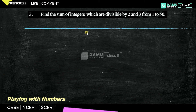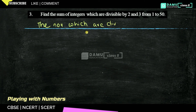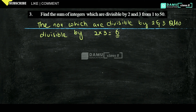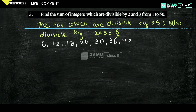In this module we are going to discuss the third question: find the sum of integers which are divisible by 2 and 3 from 1 to 50. The numbers which are divisible by both 2 and 3 are also divisible by 6. So the numbers divisible by 6 from 1 to 50 are: 6, 12, 18, 24, 30, 36, 42, 48.